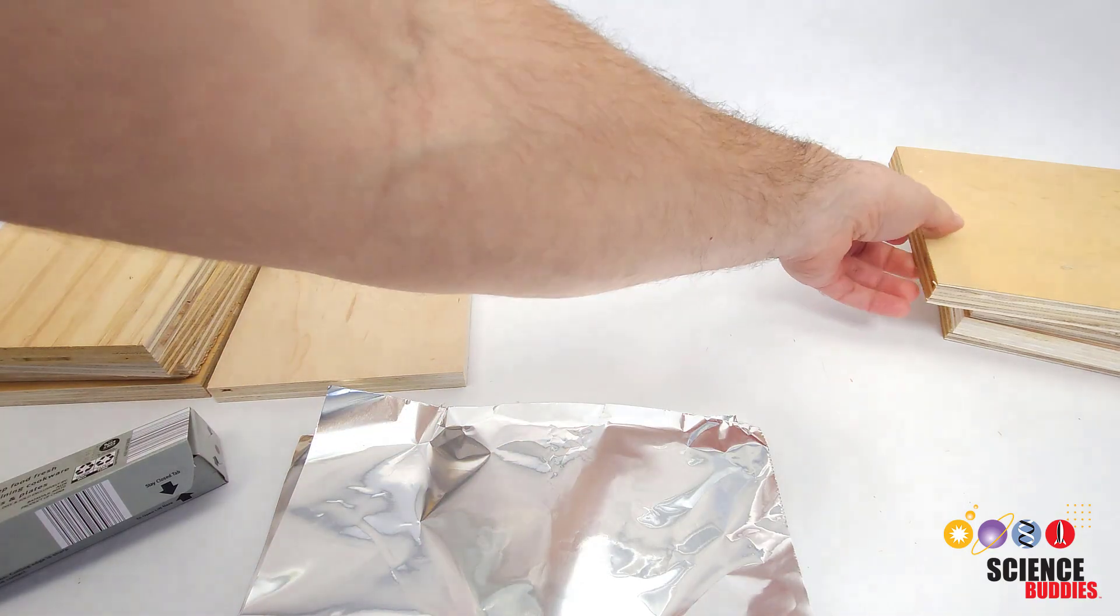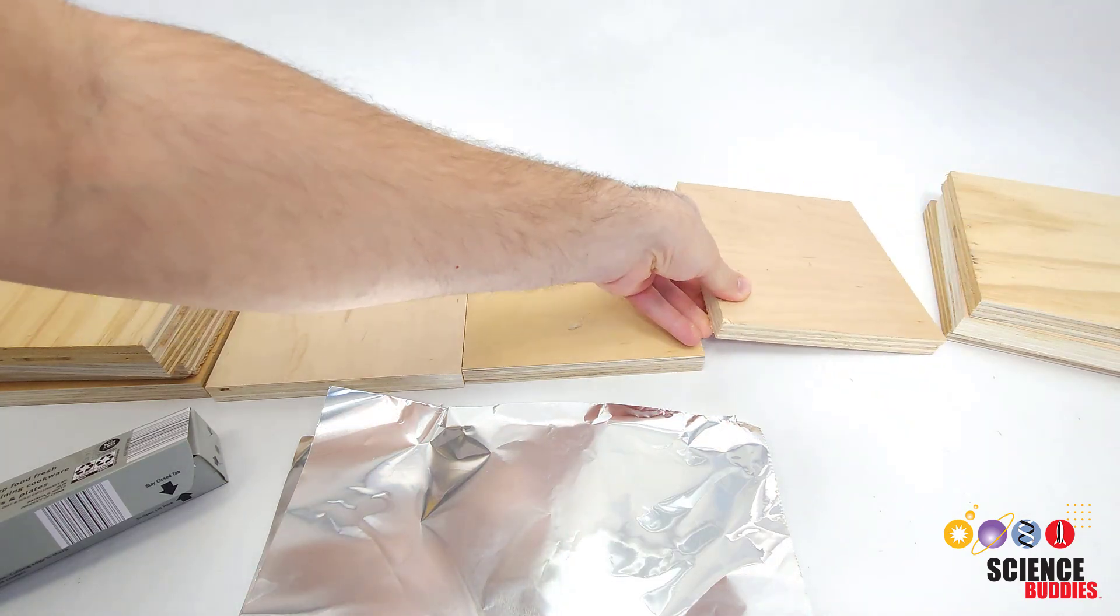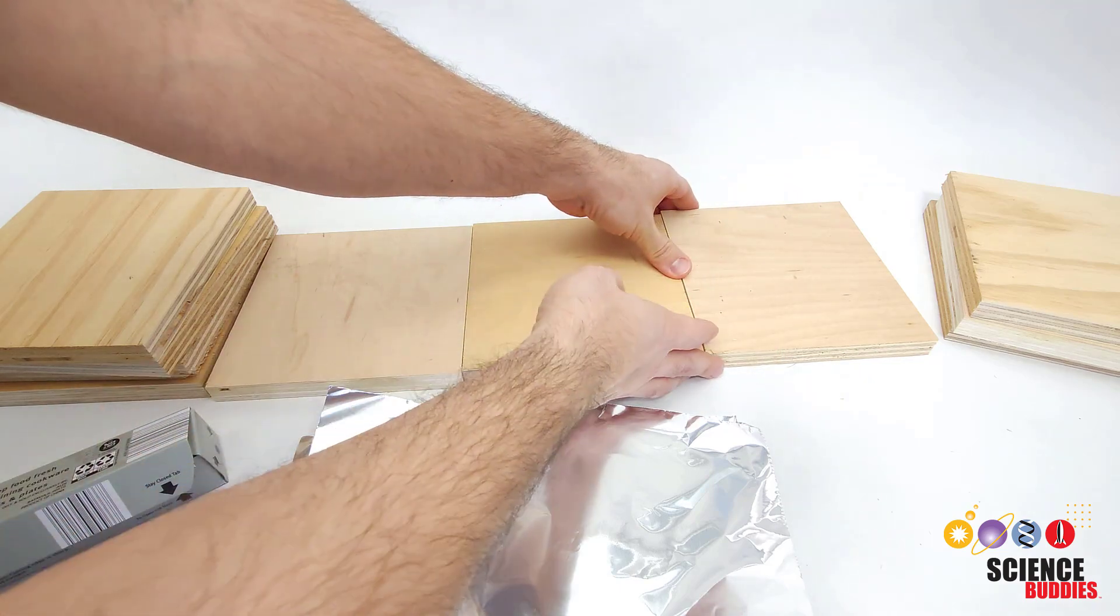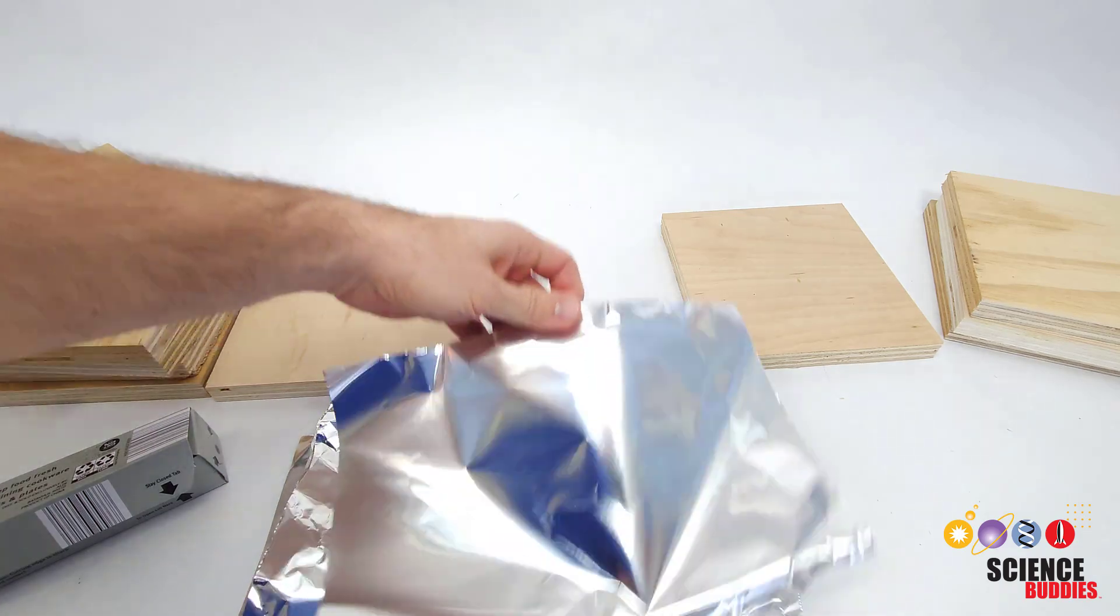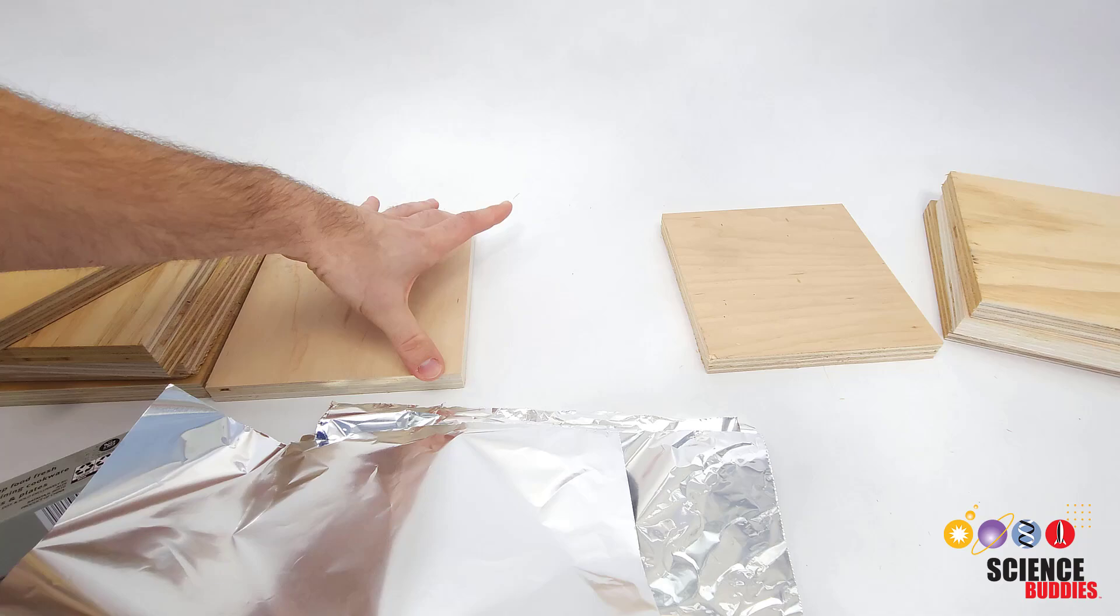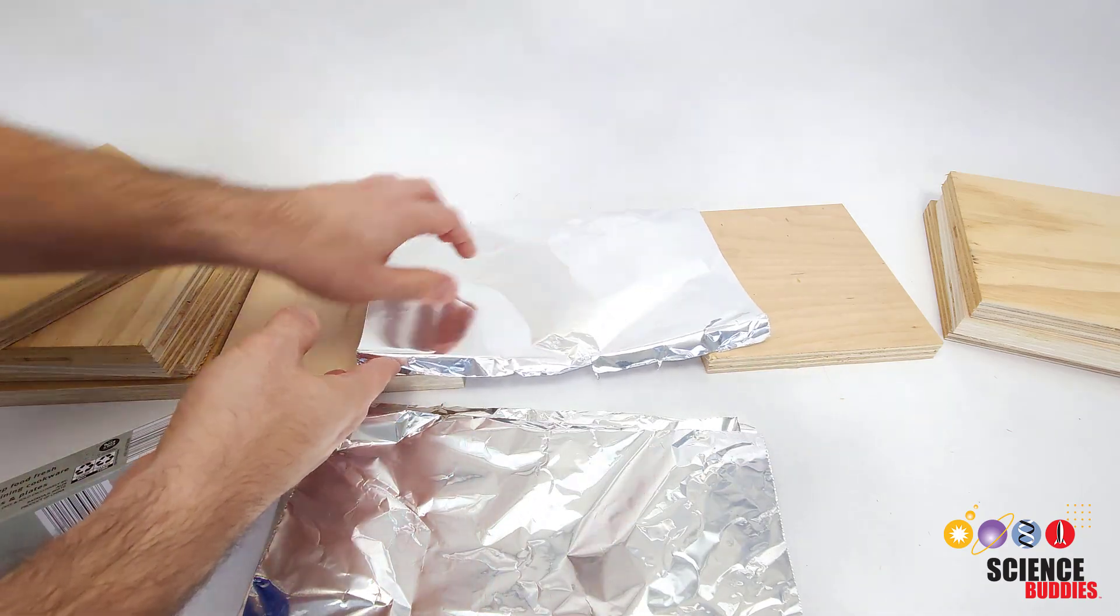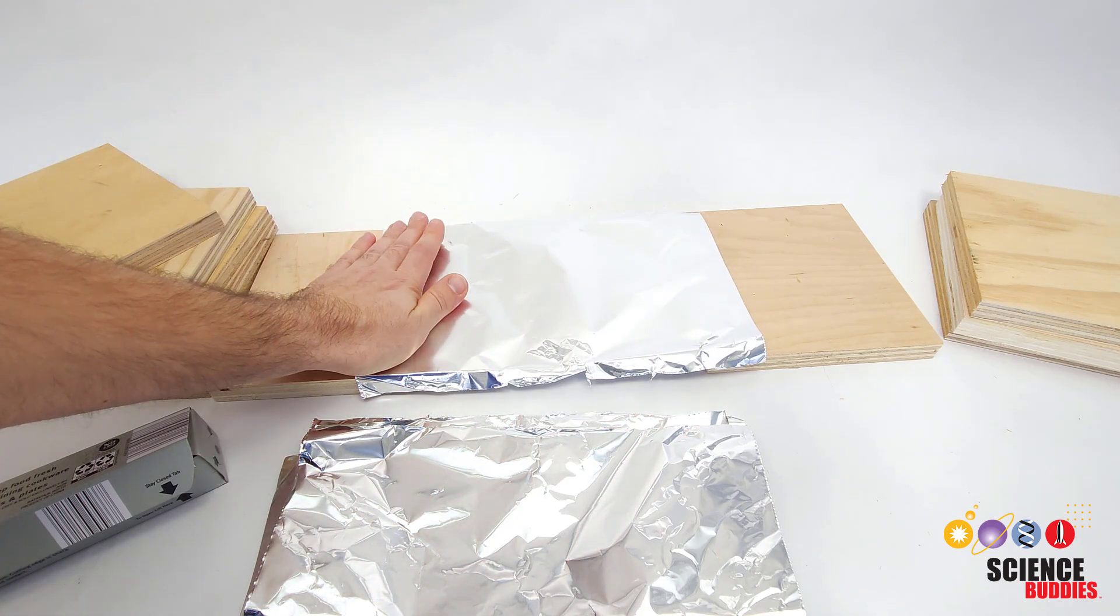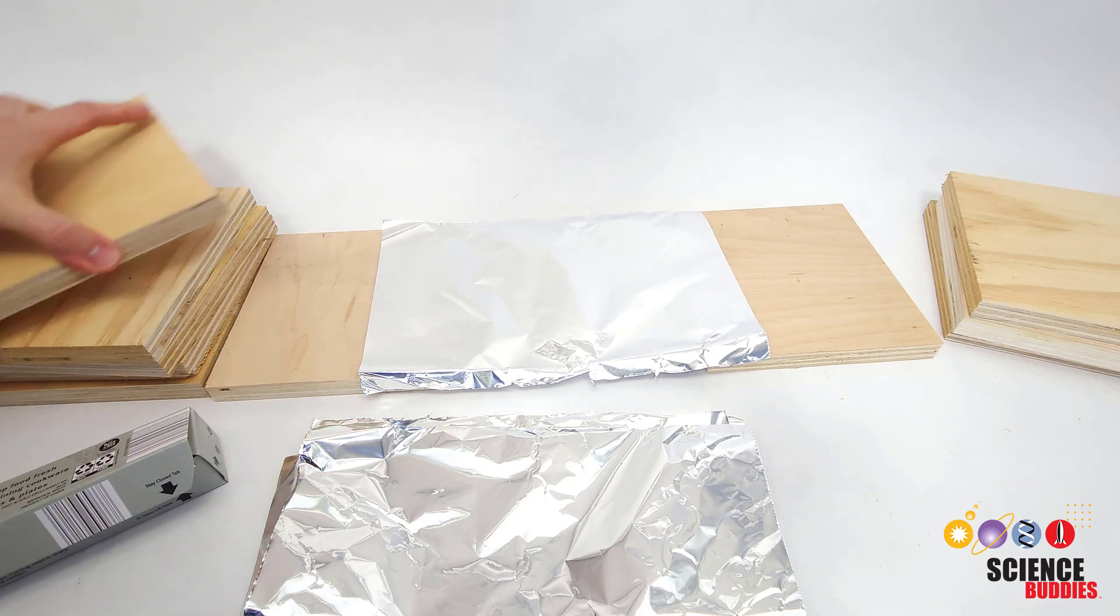So take three of your squares, use one as a spacer just to get started between the other two, lay them out like this. Then you can remove the middle square and place a piece of aluminum foil that you've cut to the same width as your squares but longer, so that you have some overlap on each side. When you put another piece of plywood on top, it's gonna help clamp that down and hold the aluminum foil in place.